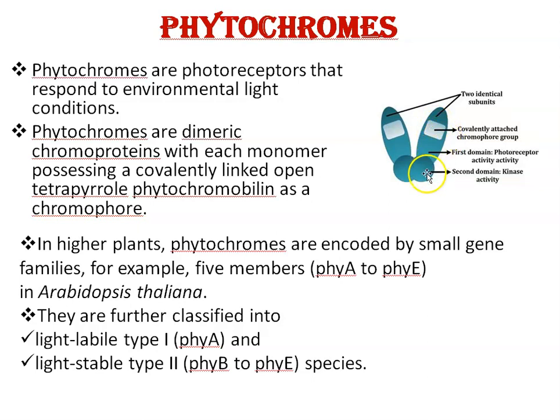These two are the domains. Now, in higher plants, phytochromes are encoded by small gene families. For example, five members — PHYA to PHYE — have been identified in our model plant, Arabidopsis thaliana.